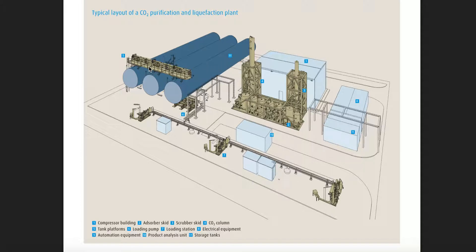Five is tanker platform. Six is loading station, right here. Seven is loading station. Eight is electrical component and electrical equipment. Nine is automation equipment. Ten is product analysis unit.